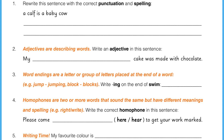Question 4. Homophones are two or more words that sound the same but have different meanings and spellings. For example, 'right' and 'write' — those two words have different spellings and different meanings but they sound the same. Write the correct homophone in this sentence: 'Please come here or hear to get your work marked.' You have to use the word that has the right meaning.